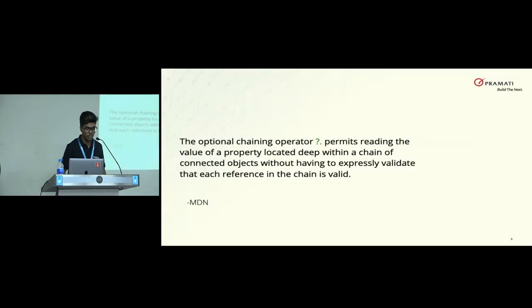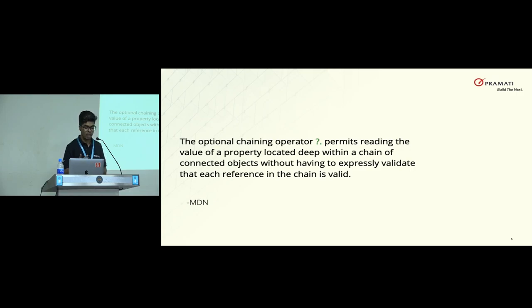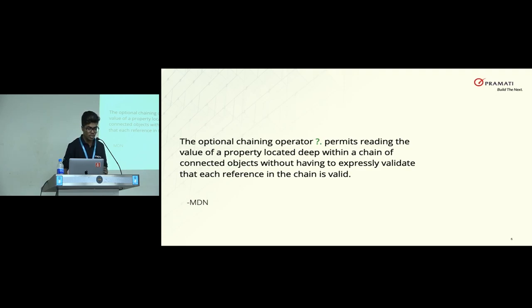Coming to optional chaining, this is what the MDN website says. We use the question mark dot syntax. If we have a JSON object and we're trying to access any property in the nested object, if there is no object present it will return undefined. And if you are still trying to access a property of undefined, it shows that some property of undefined is not there. That's when optional chaining comes into picture — before actually accessing a property, it validates if that property exists for that particular object.